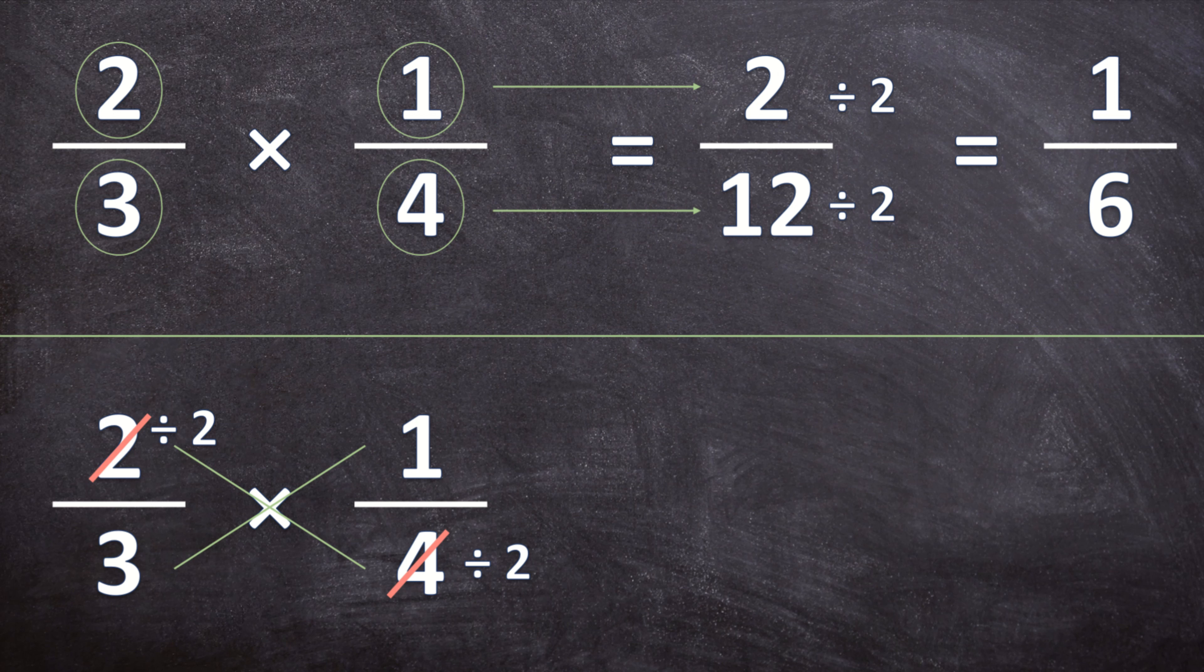So 2 divided by 2 is 1 over 3 and 4 divided by 2 is going to be 1 over 2. And now that we did the cross cancellation and our fractions are simpler we can just go ahead and multiply the simpler fractions. So 1 times 1 is equal to 1 over 3 times 2 is equal to 6.